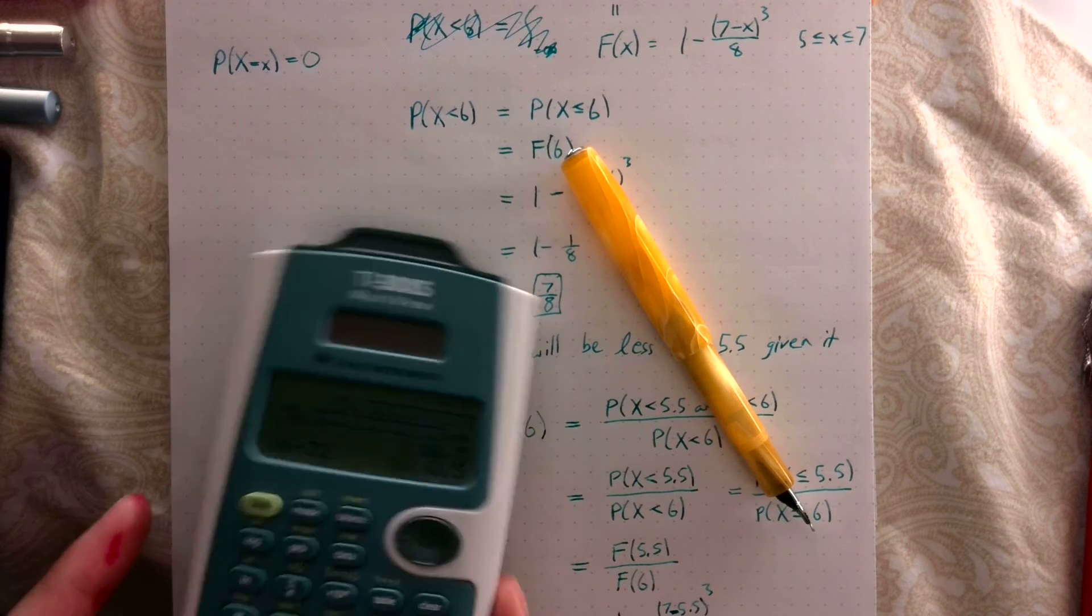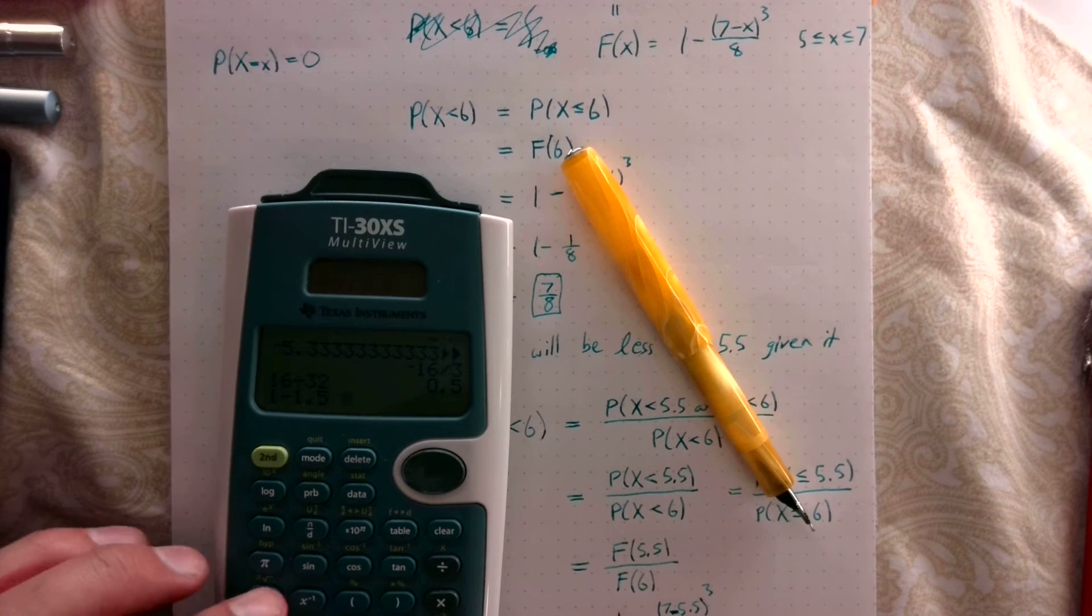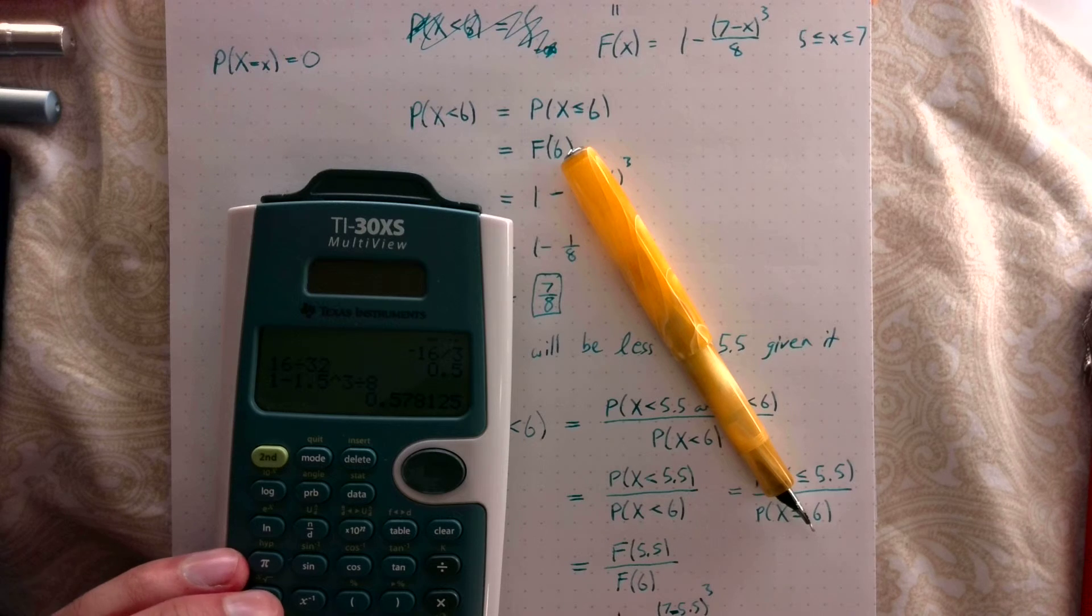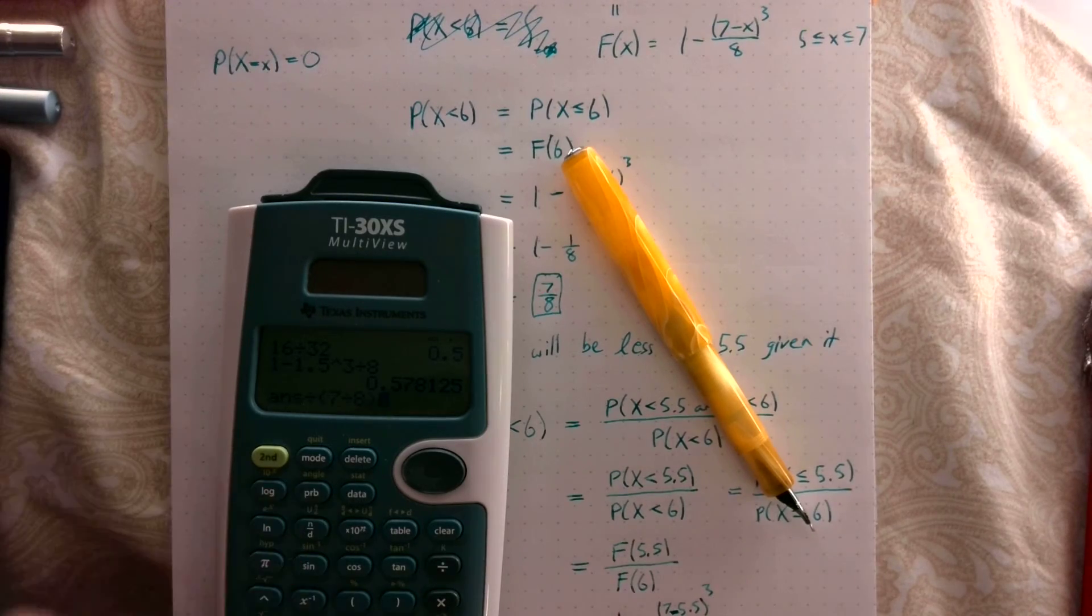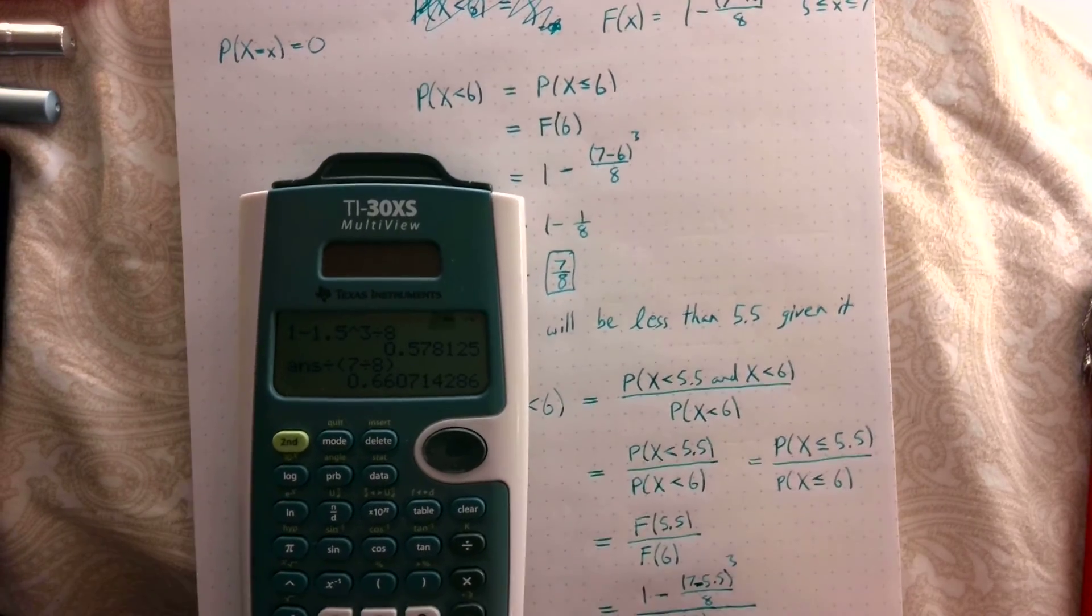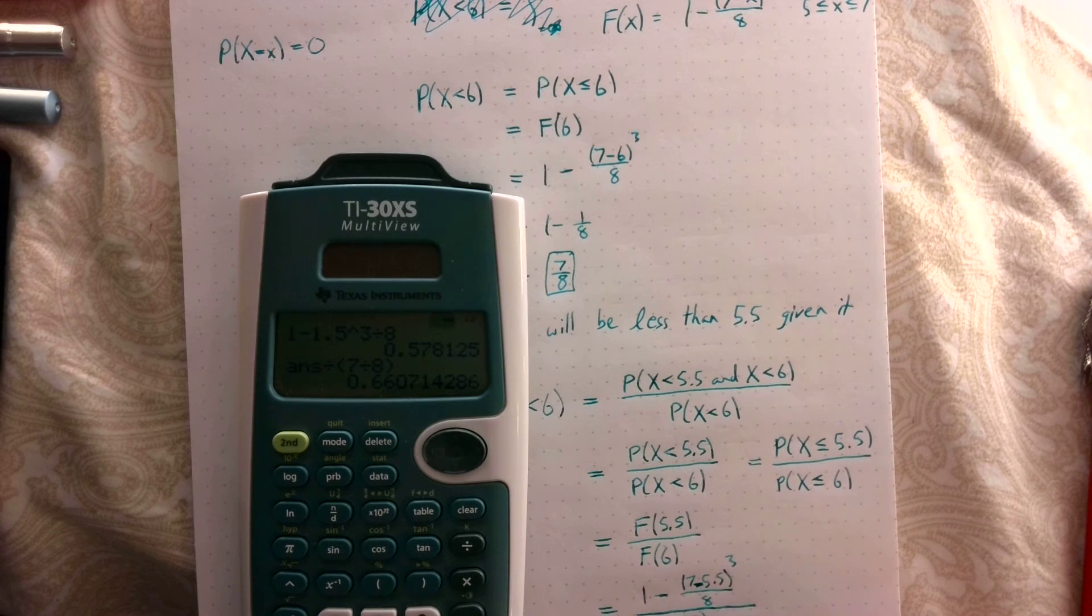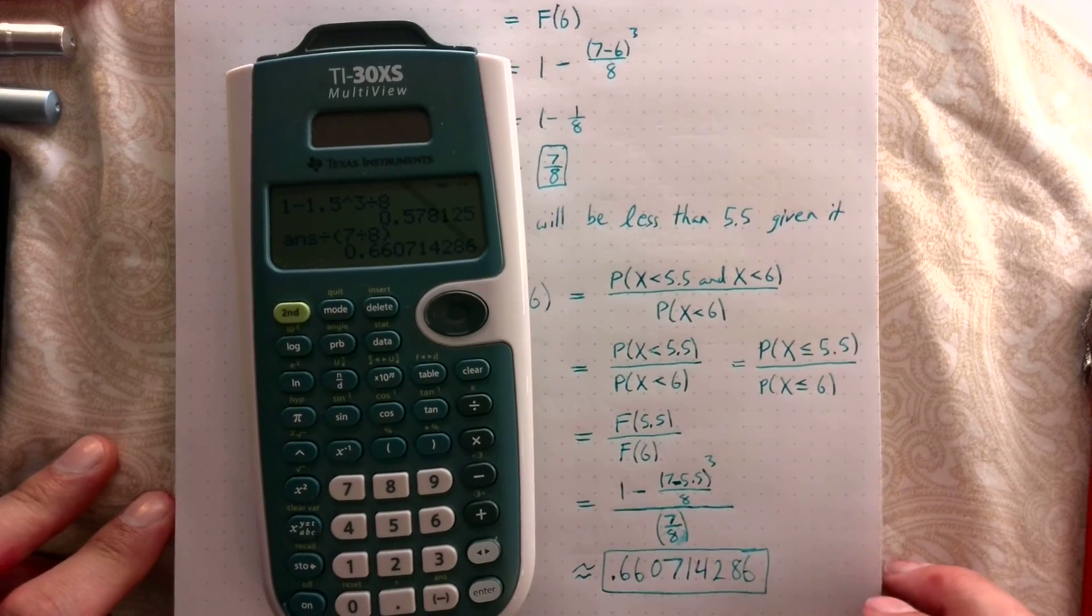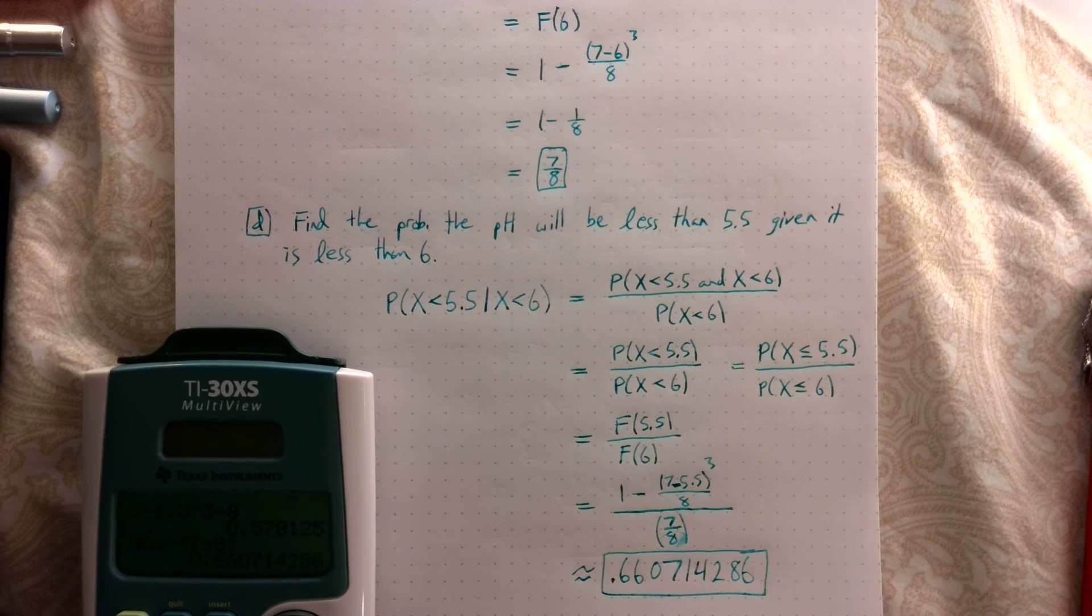So 7 minus 5.5 is 1.5, so 1 minus 1.5 cubed over 8. I got that this is approximately 0.660714286. So there you have it, that is part D.